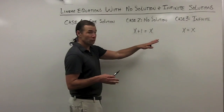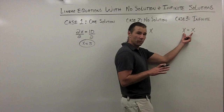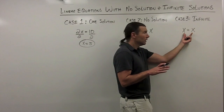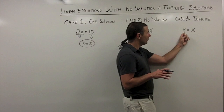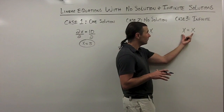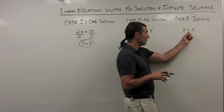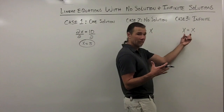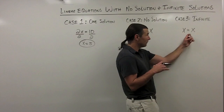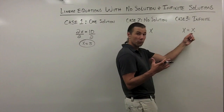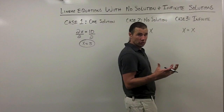Moving down to case 3 — infinite solutions. Again, I've written a really simple equation so you can see what I'm talking about: x equals x. It doesn't matter what value I plug in for x, it's going to work. If I put a 2 in here, I have 2 equals 2. If I put a 10 in here, 10 equals 10. If I put 2.53 in for x, I'll have 2.53 equals 2.53. So there's an equation that has an infinite number of solutions.